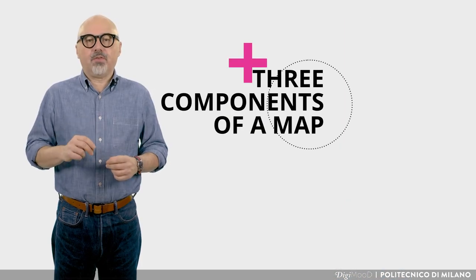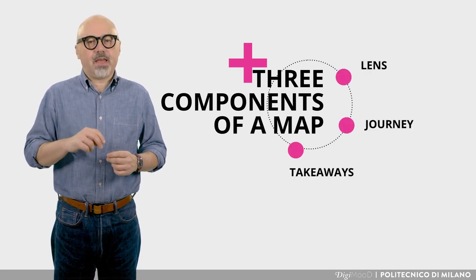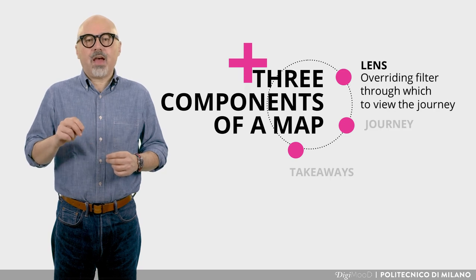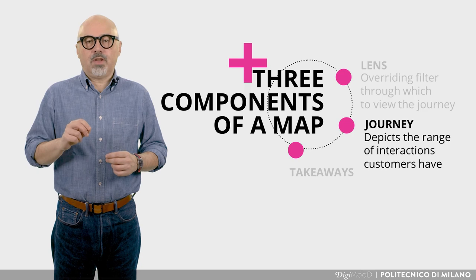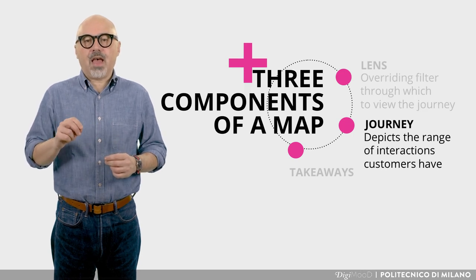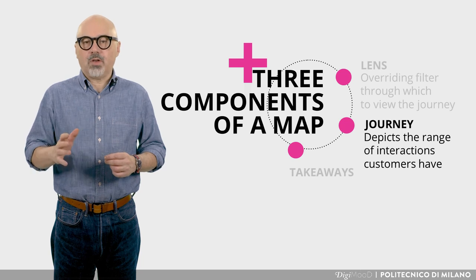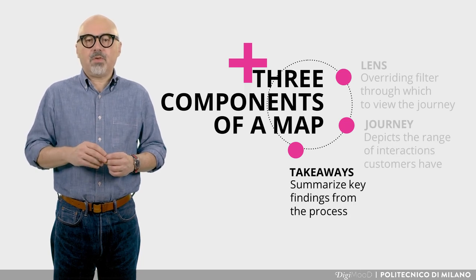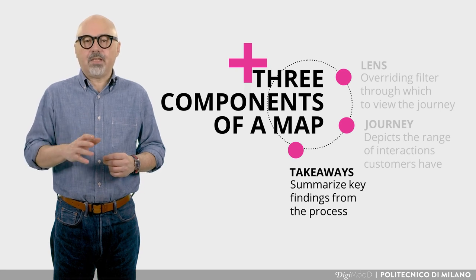There are three basic parts of the experience map that could be summarized as Lens, Journey and Takeaways. Lens is an overriding filter through which to view the journey, such as a persona, more general experience principles or a value proposition. The journey depicts the range of interactions customers have across channels, touchpoints, time and space in pursuit of satisfying one or more needs. Takeaways summarize key findings that should be linked directly to initiatives to enrich the experience, and are typically added to the map late in the process.